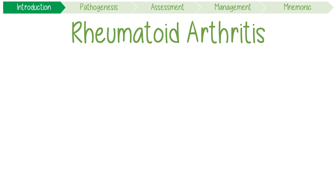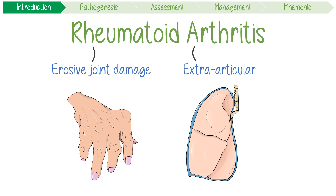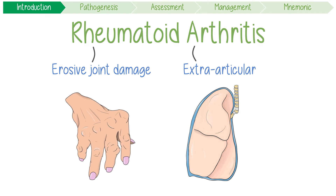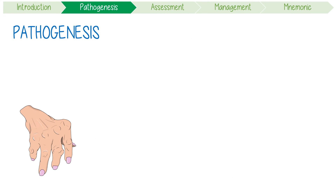Rheumatoid arthritis is an autoimmune disease that causes chronic erosive joint damage along with extra-articular manifestations, meaning other non-joint issues. In terms of causes, its pathogenesis is multifactorial, with genetic, environmental and immunological factors.